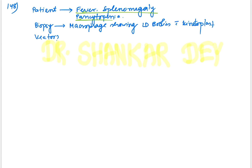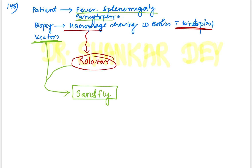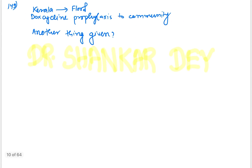Question 148: Patient with fever, splenomegaly, and pancytopenia. Biopsy showing macrophages with kinetoplast or LD bodies — this is nothing but Kala-azar or visceral leishmaniasis. The question indirectly asked about the vector. The vector for Kala-azar is the sandfly — that is the answer.